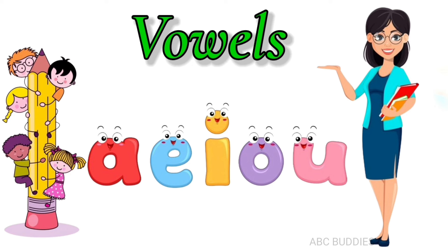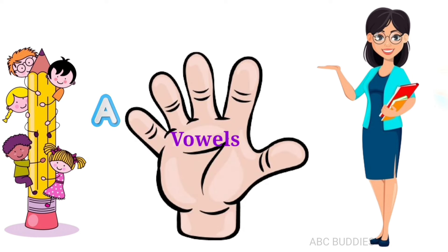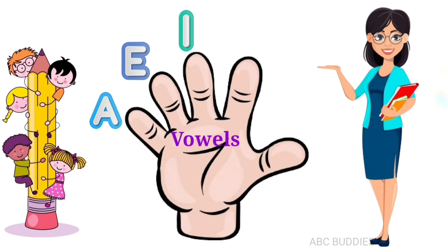You can also remember this by a hand trick. A, E, I, O, U. By this hand trick, you can remember the 5 vowels.